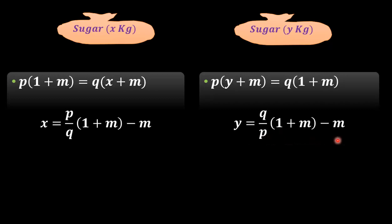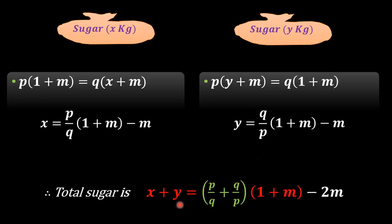So in total, he had weighed sugar equals x plus y, that is (p/q + q/p)(1 + m) - 2m. Now we will prove that this value p/q + q/p is always greater than 2.